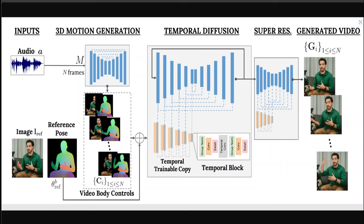VLOGGER relies on—and this is where this research shines—a two-stage pipeline based on stochastic diffusion models to model the one-to-many mapping from speech to video. The first network, as you can see on your screen, takes as input an audio waveform to generate intermediate body motion controls, which are responsible for gaze, facial expression, and pose over the target video length.